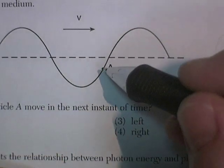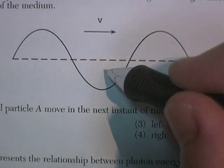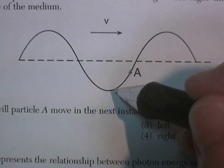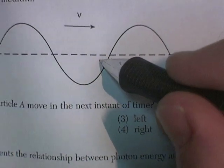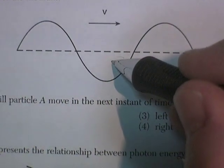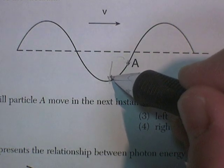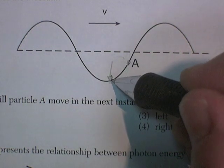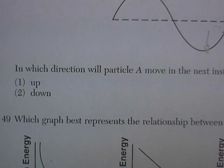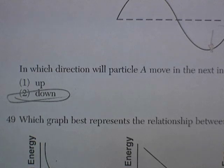So if I'm a particle in the medium right here and the wave begins to move, which way do I have to go to stay with the wave? In the next moment of time, I have to move downwards in order to stay with the medium. So in which direction will the particle move? It has to move down.